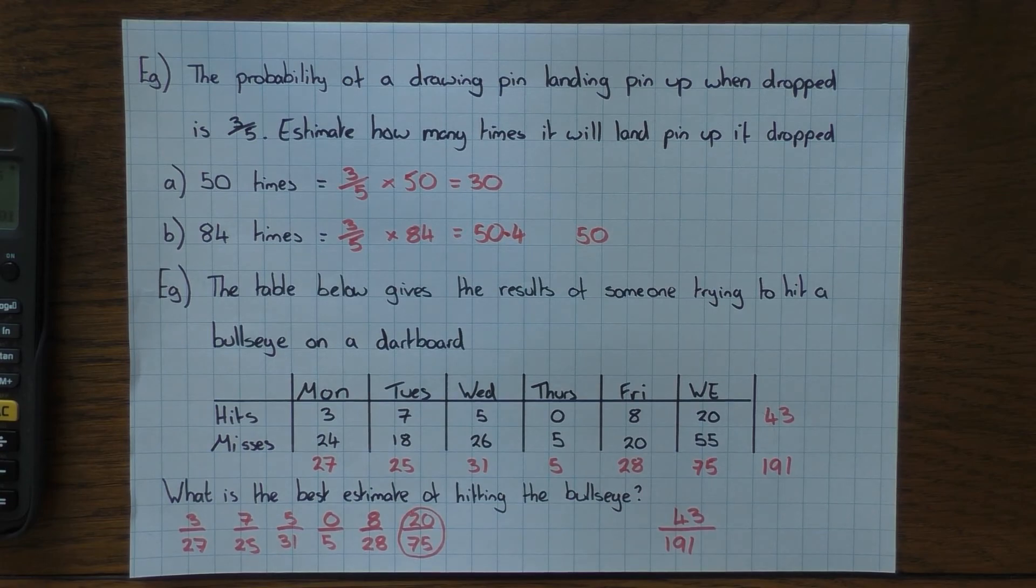The more times you do something, the better or the higher the accuracy of your experiment or your probability that you are doing. So always, always, always pick the value that has the highest amount of trials—the highest amount of times you've done something. If you do that, you'll always have the best estimate from the data you are using. So hopefully that clears up a few things with relative frequency. It'll just remind you of how you do it. So thanks for watching guys. Cheers.